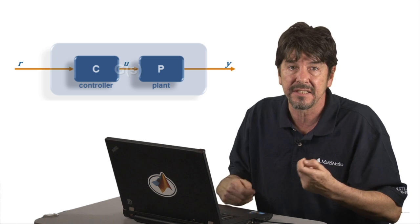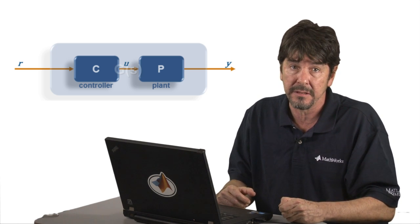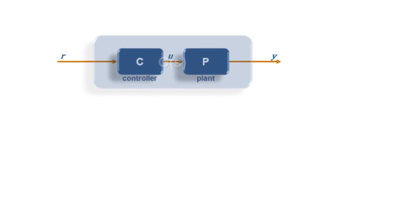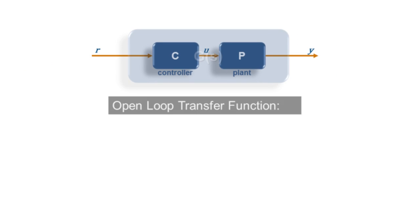What we're looking at here is a system in an open loop configuration. In the Laplace domain, all the components of a block diagram can be treated as algebraic terms, and complicated convolution operations with signals become simple multiplications. So for this case, the output signal Y is equal to the input signal R multiplied by C, and that result then multiplied by P.